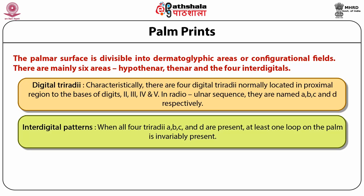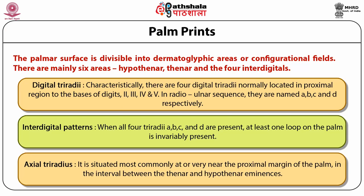Interdigital patterns: when all four triradii small a, b, c, and d are present, at least one loop on the palm is invariably present. Loops, whorls, and vestiges situated in the interdigital areas can be specifically described. In the case of a loop, the direction of exit at the core can be used to describe loops as distal or proximal, ulnar or radial. Axial triradius: it is situated most commonly at or very near the proximal margin of the palm in the interval between the thenar and the hypothenar eminences, though they may occur as distal at the center of the palm.